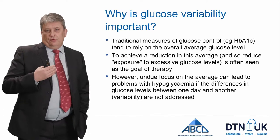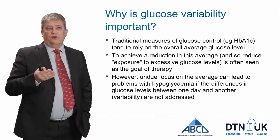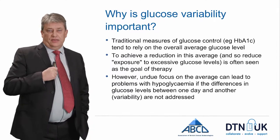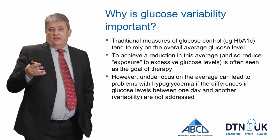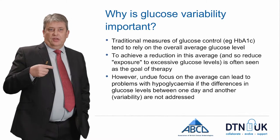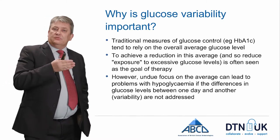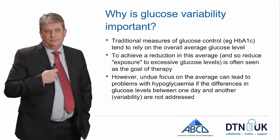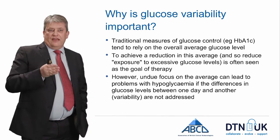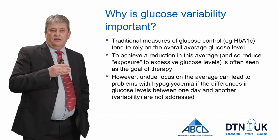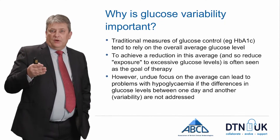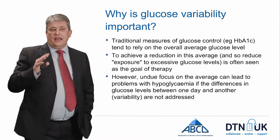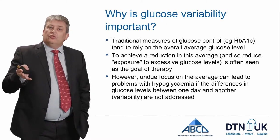Traditionally we've thought a lot about glucose control in terms of trying to reduce the overall average of glucose levels with measures such as the haemoglobin A1c, and our goals of care have often been to try and reduce this average to minimise an individual's exposure to excess glucose levels, which we know can cause problems for blood vessels. However, if we make this reduction of average the only focus of our care, we know that can lead to problems by the generation of hypoglycemia if the differences in an individual's glucose levels from one day to the next — which we term glucose variability — aren't also addressed alongside.